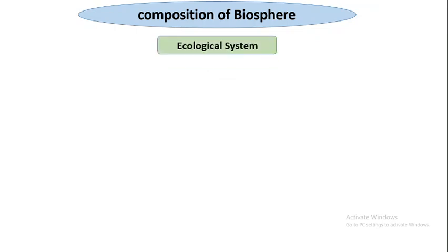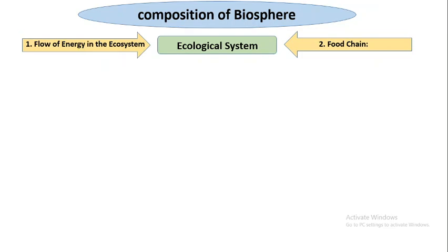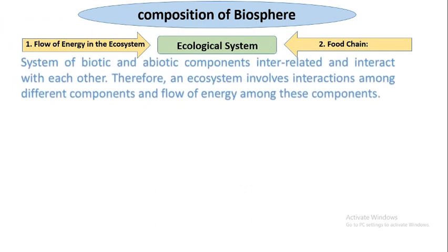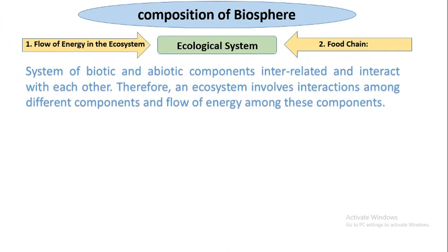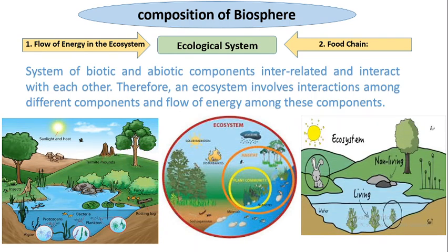Composition of biosphere: the ecological system consists of two parts — the flow of energy in the ecosystem and the food chain. The system of biotic and abiotic components is interrelated and interacts with each other. An ecosystem involves interactions among different components and flow of energy among these components. In this ecological system, energy flows from one trophic level to another through the food chain, where one organism is eaten by another. You can see sunlight is captured by plants, plants are eaten by herbivores, and so on — the energy cycles among the ecosystem in the form of a food chain.